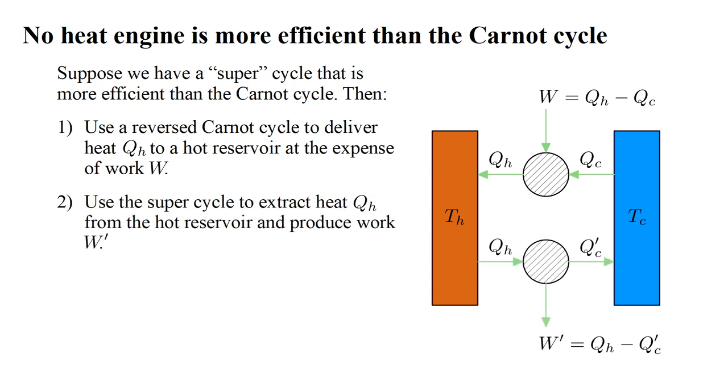Then, use our super cycle to extract the heat Q hot from the hot reservoir, and produce work W prime. Recall that the work W we put into the reverse Carnot cycle to deliver heat Q hot to the hot reservoir, equals the work we would get out of a forward Carnot cycle for the same input heat. Since the super cycle is more efficient than the Carnot cycle, it must produce more work from heat Q hot. So W prime must be greater than W. Then, by the first law, the heat delivered to the cold reservoir by the super cycle, Q cold prime, must be less than the heat Q cold extracted by the reverse Carnot cycle.